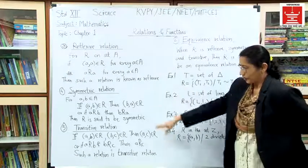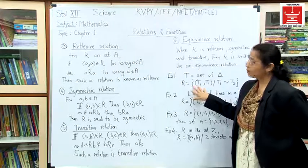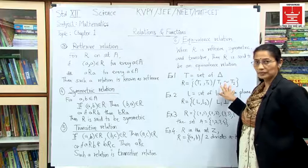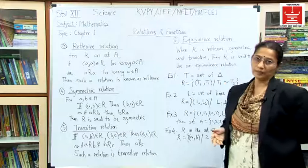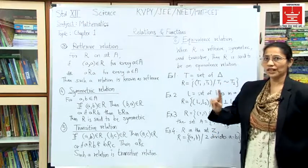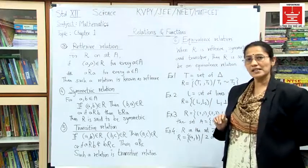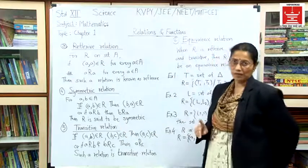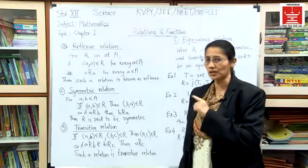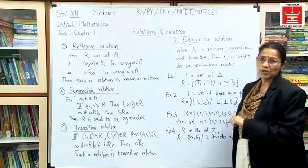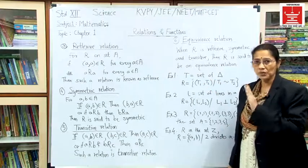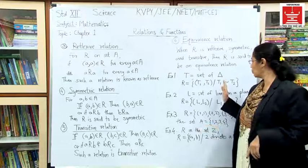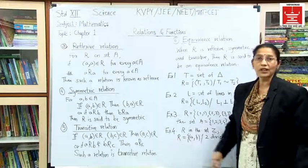Now the third one: the transitive relation. For transitivity we consider three triangles. First triangle is similar to second triangle, and second triangle is similar to third triangle. Is the first triangle similar to the third one? Yes, it is. In transitivity, if the first is related to the second and the second is related to the third, the first must be related to the third. So transitivity holds.